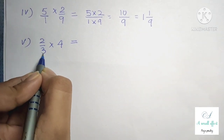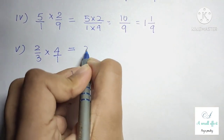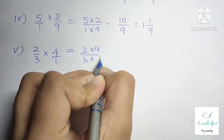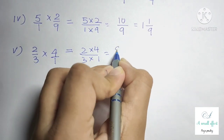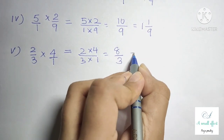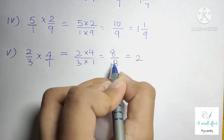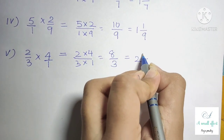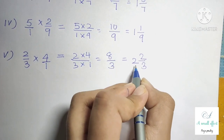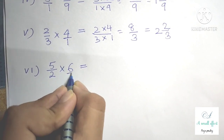Question number 3 part 5 is 2 by 3 into 4. We can write 4 as 4 by 1, multiply numerator with numerator and denominator with denominator: 2 into 4 is 8 and 3 into 1 is 3. We can't reduce to lowest form, so we write as mixed fraction: 3 twos are 6, and 8 minus 6 is 2, with denominator 3. So our answer is 2 whole 2 by 3.